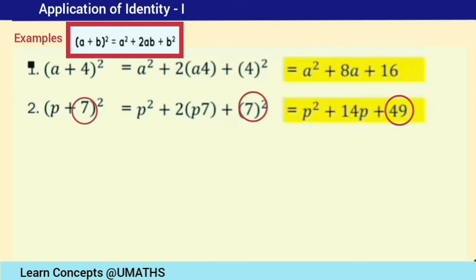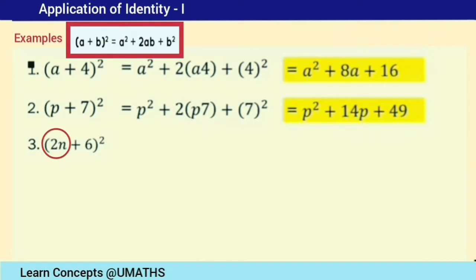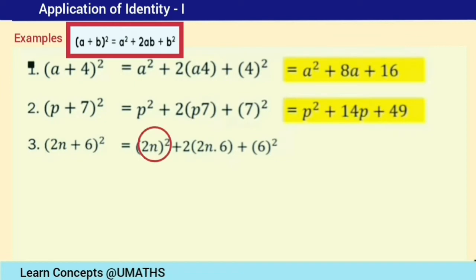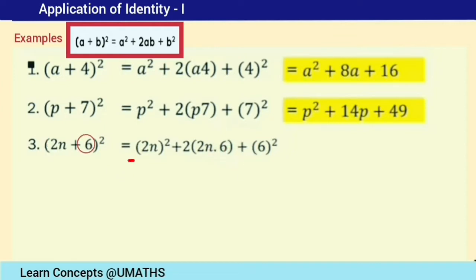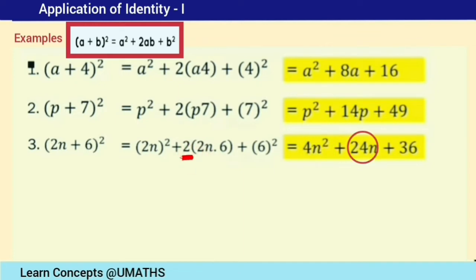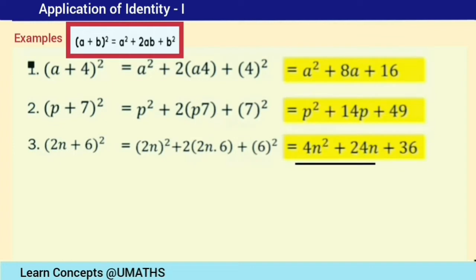Next, solve 2n plus 6, whole square. The first term is 2n, so the square of the first term is (2n) squared. Then 2 times the first term times the second term: 2 × 2n × 6. Then square the second term: 6 squared. After squaring, 2n squared gives 4n squared; the middle term gives 24n; and 6 squared is 36. So we get 4n squared plus 24n plus 36.